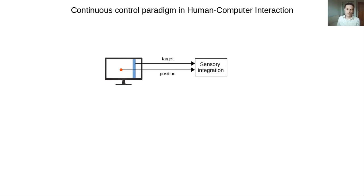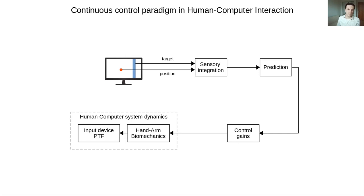First, we would have to process our sensory information to form a representation of the system state. Then future states are predicted to anticipate and overcome possible delays in the loop, to then build a control action that drives the dynamics of the human-computer interface and eventually moving the pointer on the screen.